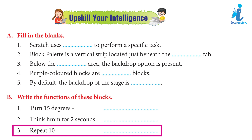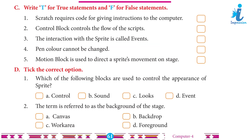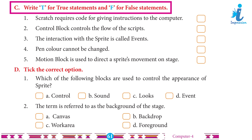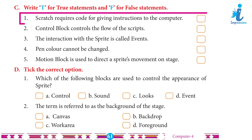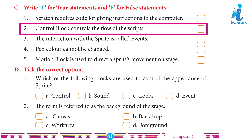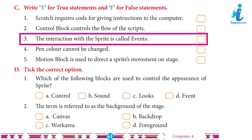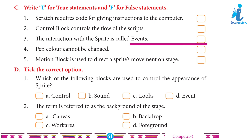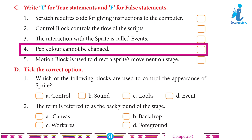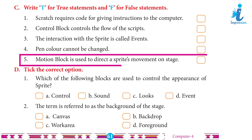3. Repeat 10 — Answer: This allows you to repeat a sequence of commands a particular number of times; you set the number of times the loop will repeat at the top of the block. Write T for True and F for False. 1. Scratch requires code for giving instructions to the computer — False. 2. Control block controls the flow of the scripts — True. 3. The interaction with the sprite is called events — True. 4. Pen color cannot be changed — False. 5. Motion block is used to direct a sprite's movement on stage — True.